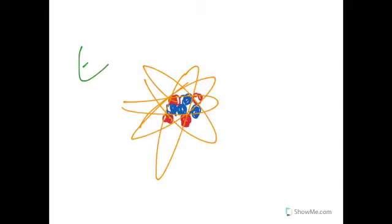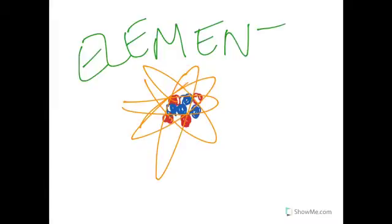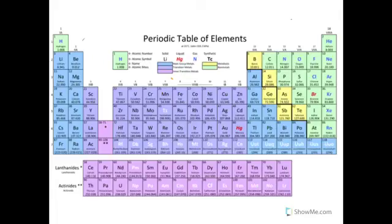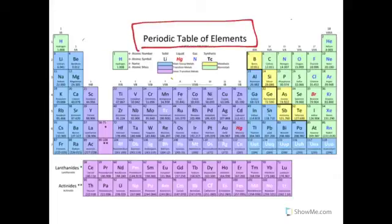An element is made of one type of atom. And all the known elements on Earth can be represented in the periodic table of elements.